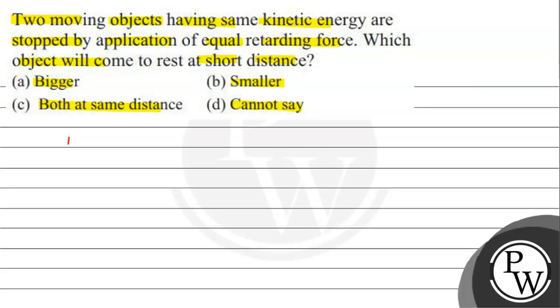Okay, so this is the key concept - work energy theorem. What is it? Net work done equals change in kinetic energy. W_net equals ΔK. This is W_net equals K_final minus K_initial.